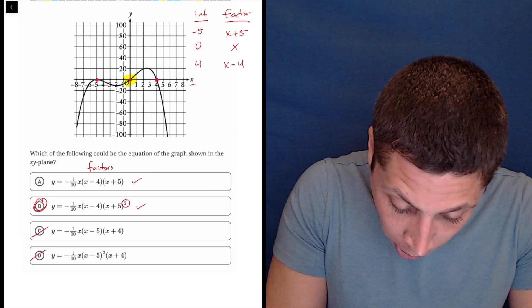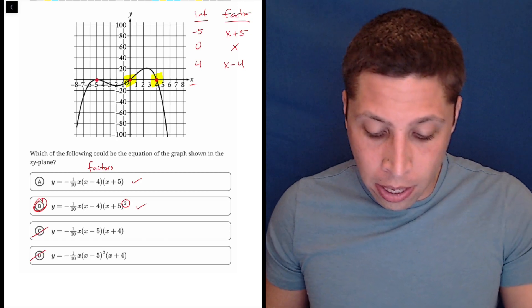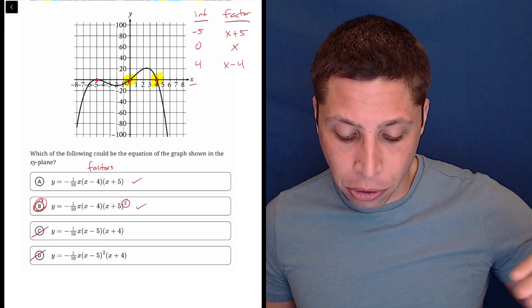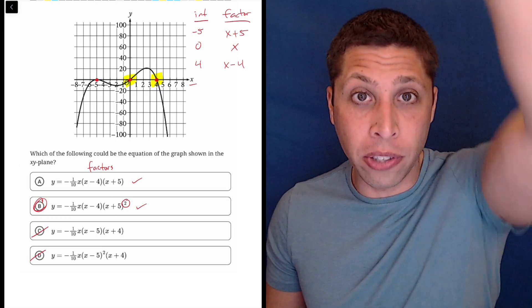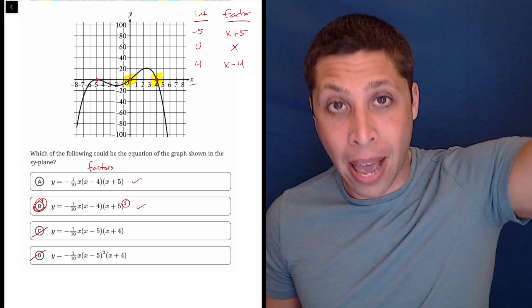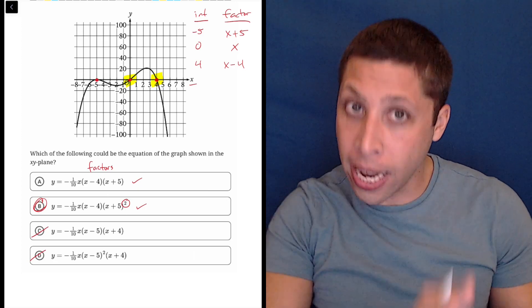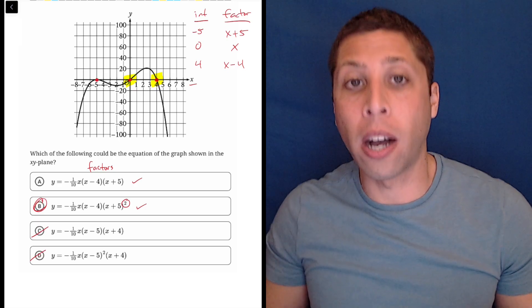Now the reason that that squared actually matters is the way we interact with the x-axis can change. At zero and four, we are just passing through the x-axis. Notice our line is kind of going right through the zero and up and above. And then it's coming back down through the four and going below. So it's passing through, it's hitting it, but it's continuing on.